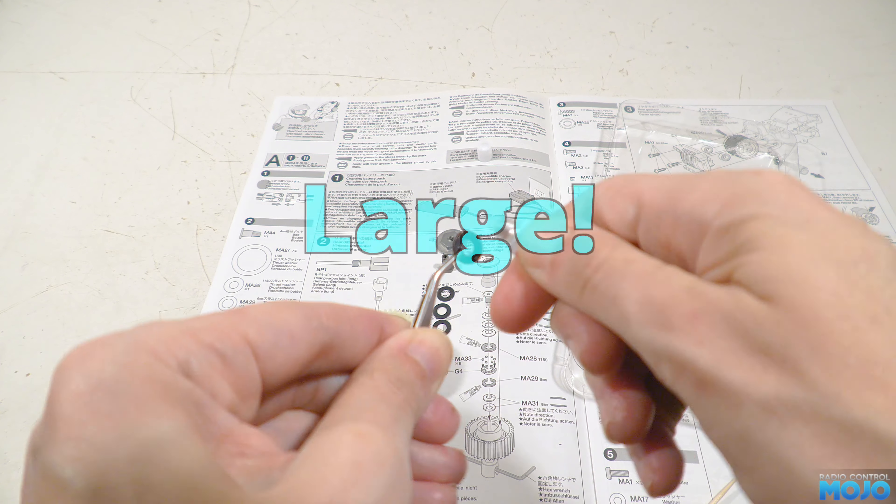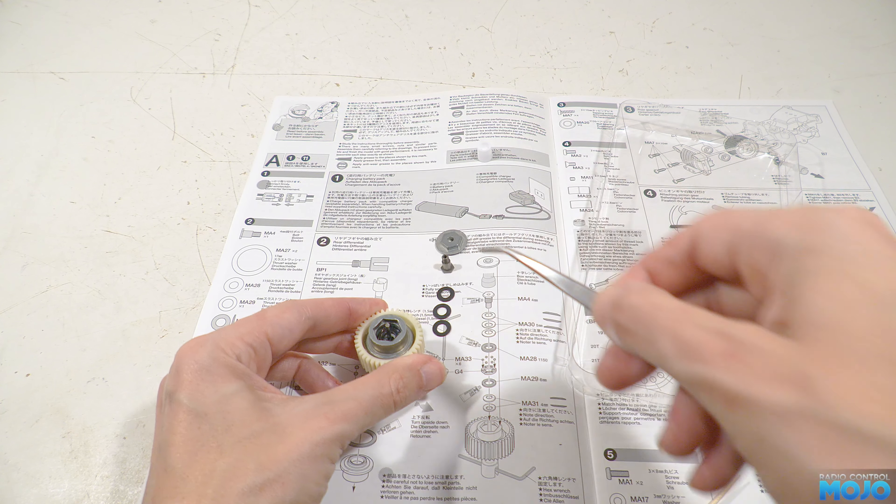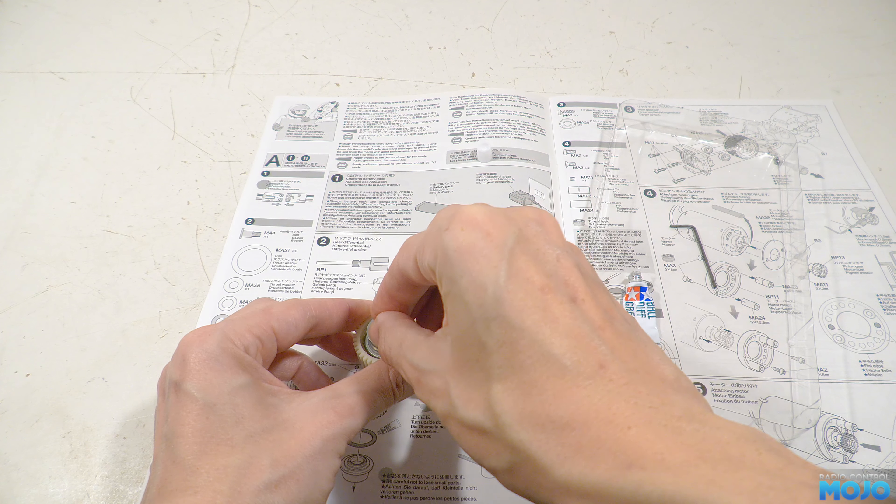Next, the small washer goes in after getting a coat of grease, followed by the three 5mm disc springs. Again, make absolutely sure they're all going in the right way up.